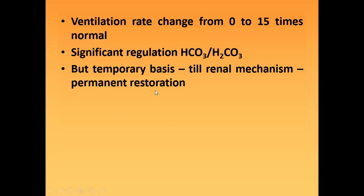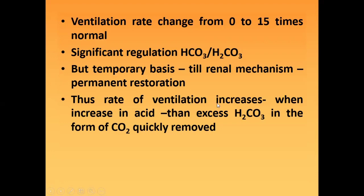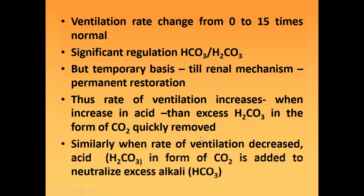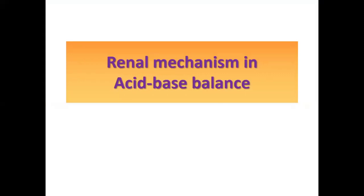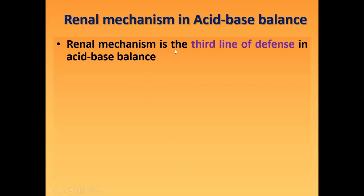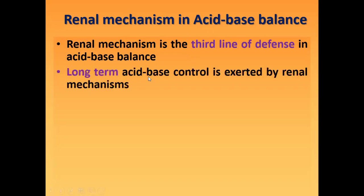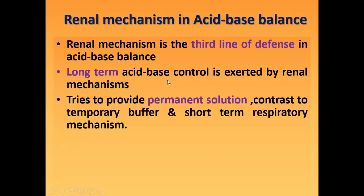Respiratory regulation is on a temporary basis; renal mechanism is the permanent restoration. When the rate of ventilation increases with an increase in acid, the excess H2CO3 in the form of carbon dioxide is quickly removed. When ventilation decreases, H2CO3 in the form of CO2 is added to neutralize excess alkali, that is HCO3. Renal mechanism is the third line of defense in acid-base balance — buffer was first, respiratory was second, and renal is third. It is a long-term, permanent solution for pH balance, in contrast to the temporary buffer and short-term respiratory mechanism.